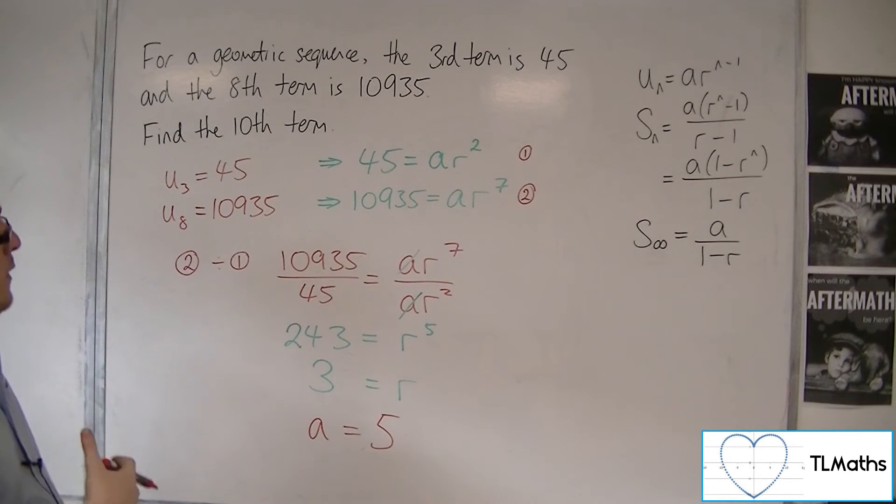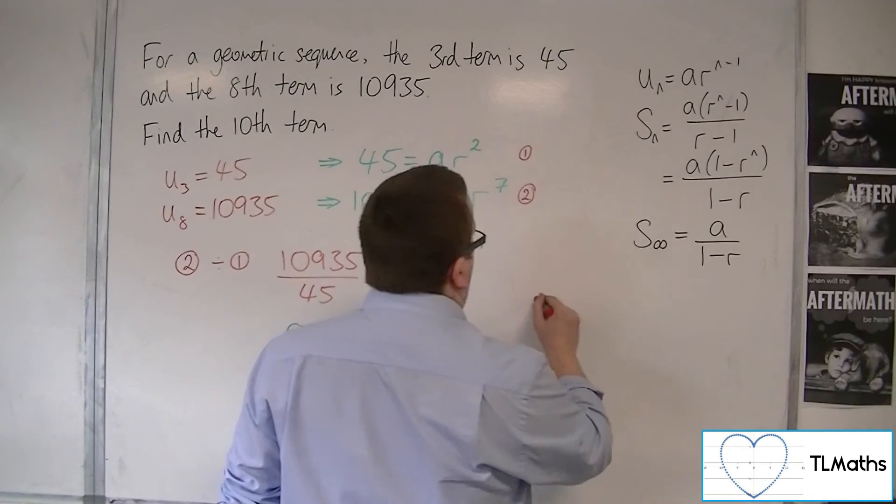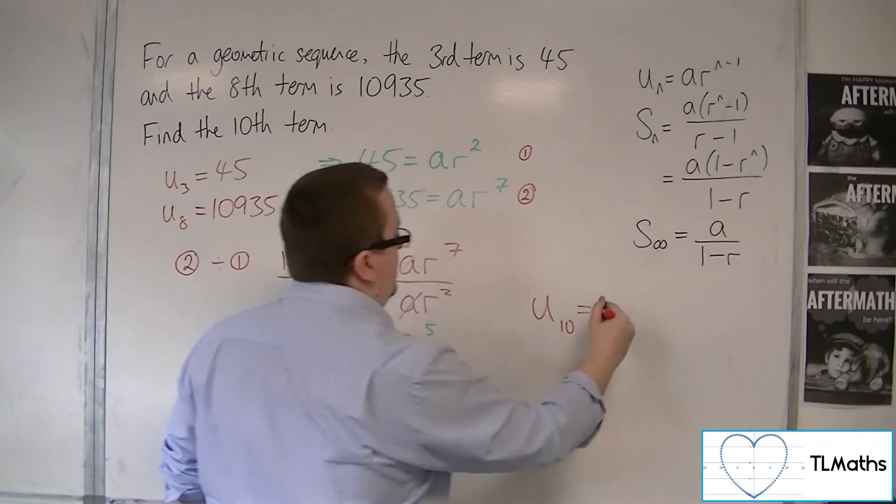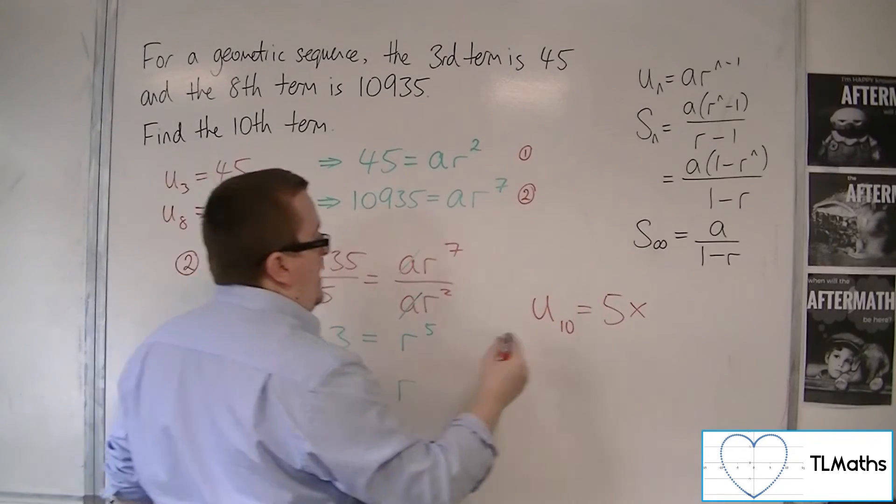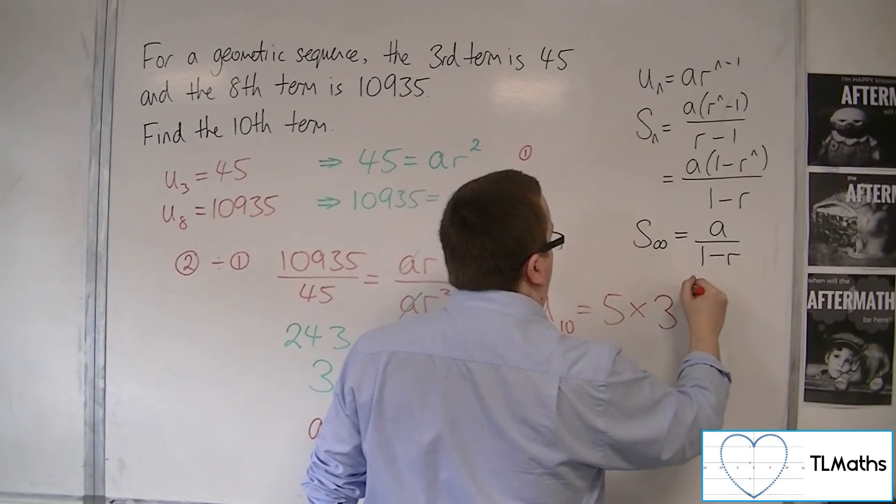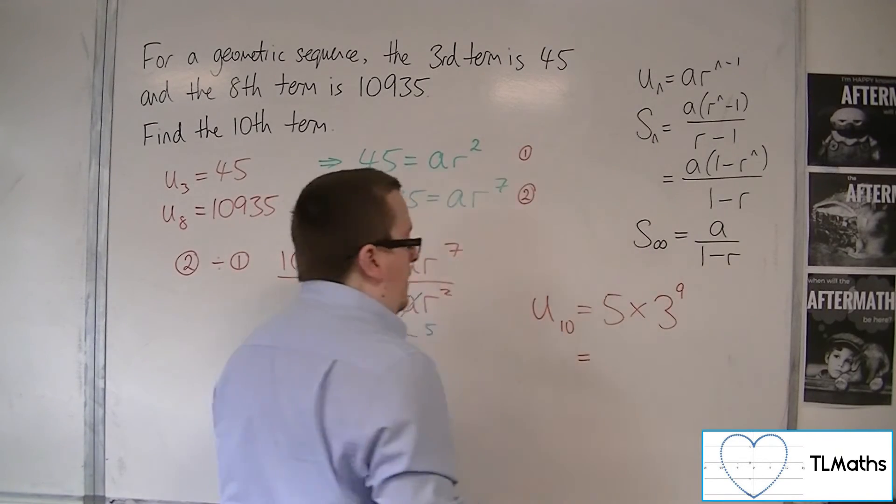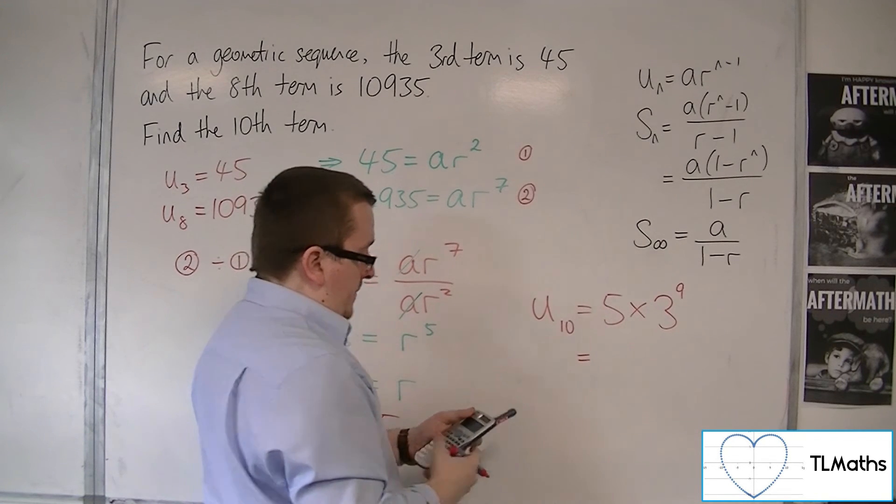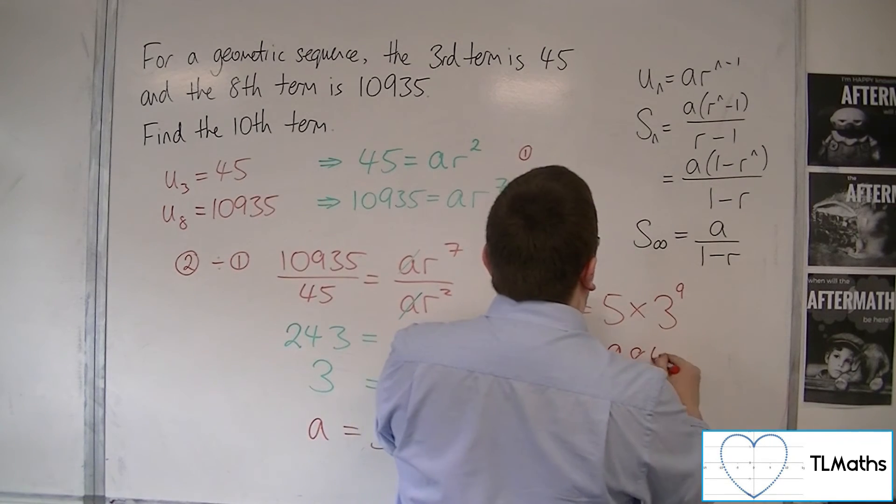So we now have A, we now have R. And so if I want to find the 10th term, then U10 is equal to A, so 5, times R, 3, to the n minus 1. And so that would be 9. So 5 times 3 to the power of 9, which is 98415.